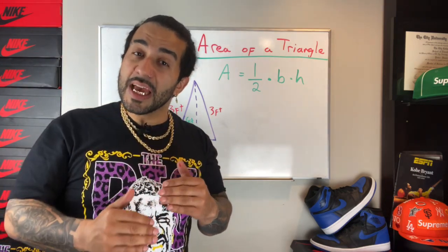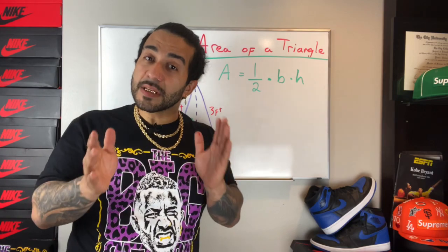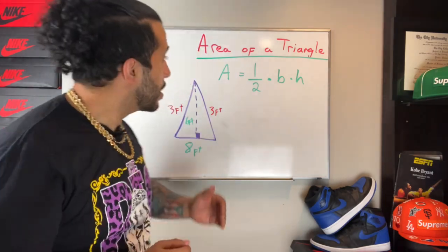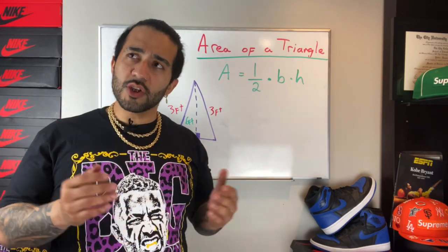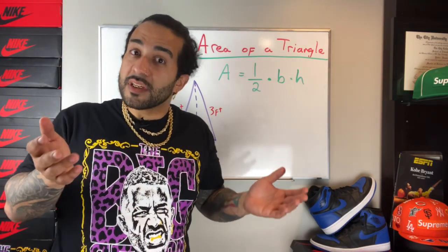We're going to talk about the different shapes and how to find the areas. Today we're gonna find the area of a triangle - you know, a triangle like a pyramid, like the ones in Dubai.